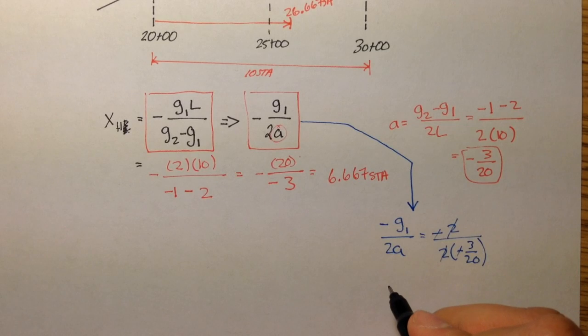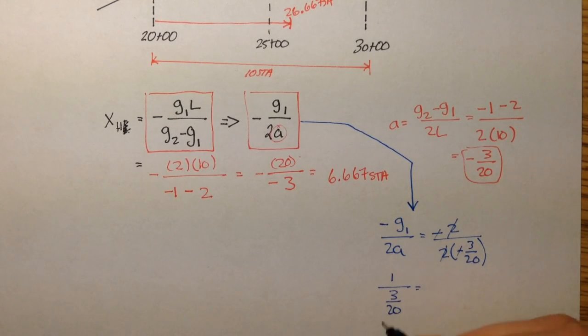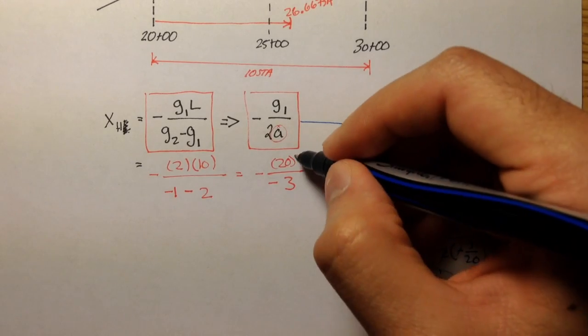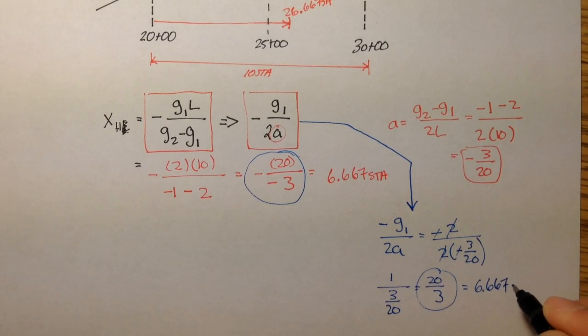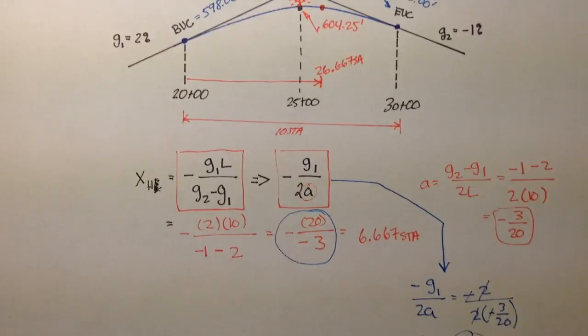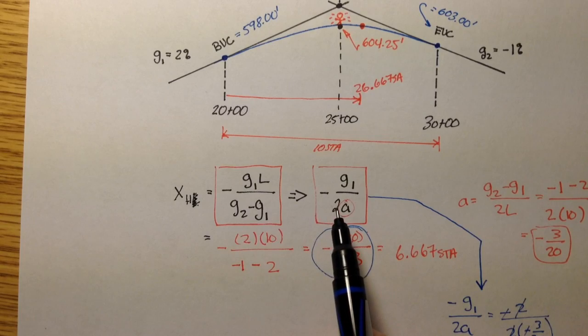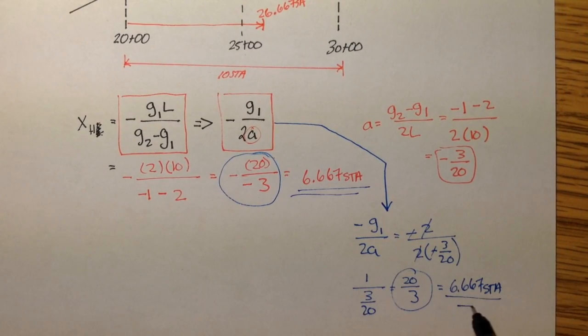So you're really left with 1 over 3 over 20. And if you find the reciprocal, or multiply it by the denominator's reciprocal, it's going to be 20 over 3. And what do you know? 20 over 3. That's equal to 6.667 stations. So you can find x two different ways. You can use this equation here, or you can use the equation on the right. Both will give you the same answer.